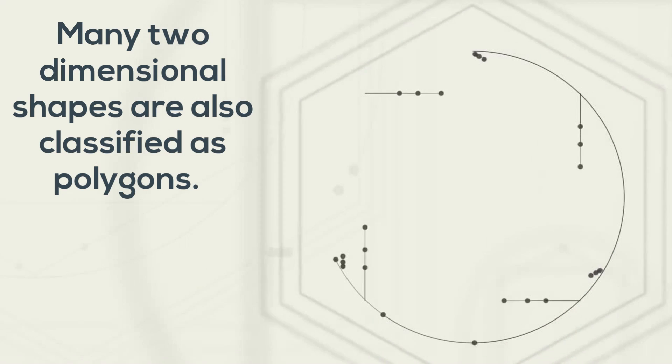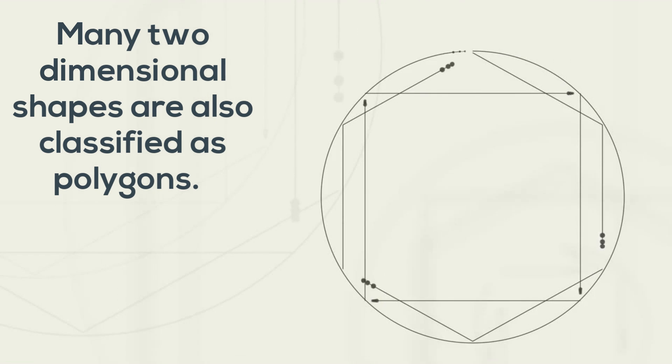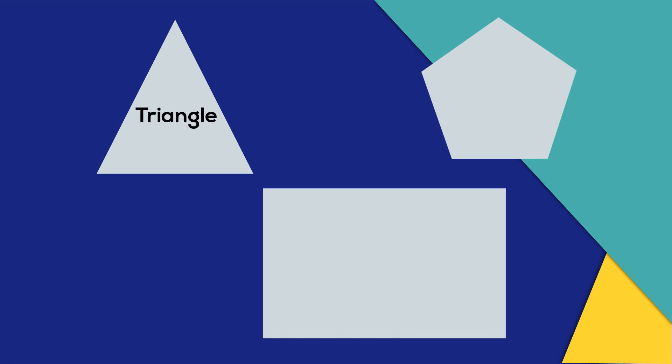Many two dimensional shapes are also classified as polygons. Here are some examples of polygons. You have a triangle, a pentagon, and a quadrilateral.